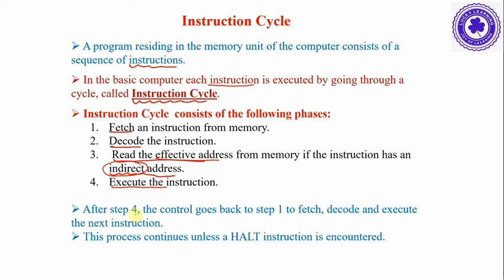After step four, the control goes back to step one to fetch, then decode, read the effective address, and execute the next instruction. This process continues unless a halt instruction is encountered to stop execution of the program.